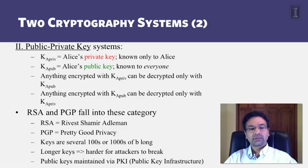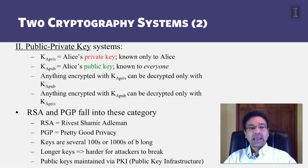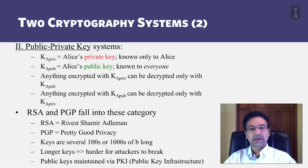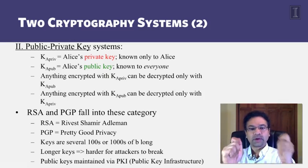The second flavor is public-private key systems. Here each user is given not just one key but a pair of keys. Alice has both a private key and a public key. Alice's private key, K_A_priv, is known only to Alice — no other principal in the system knows it. Alice's public key, K_A_pub, is known to everyone. The private and public keys are paired in a special way: any message encrypted with Alice's private key can be decrypted only using Alice's public key, and vice versa.